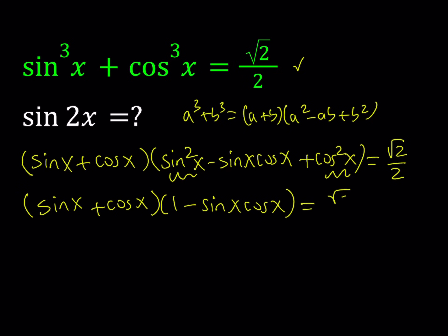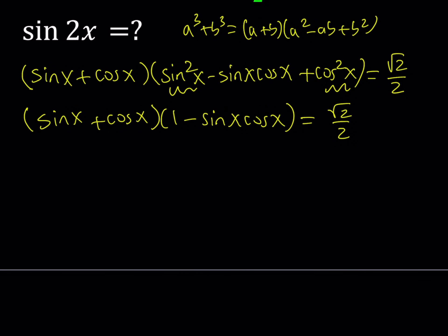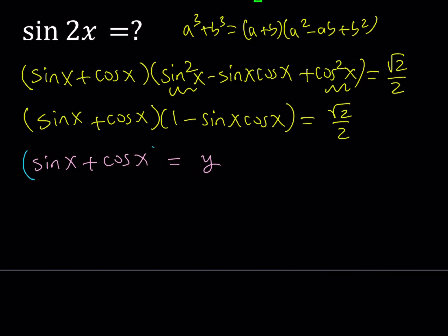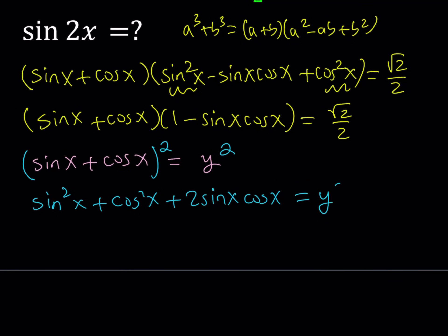Now here we do have the sum of sine and cosine, and we do have the product. And obviously they are related through the Pythagorean formula. So for that purpose, I'll take sine x plus cosine x and call that y. Then I would like to square both sides. We get sine squared x plus cosine squared x plus 2 sine x cosine x equals y squared.